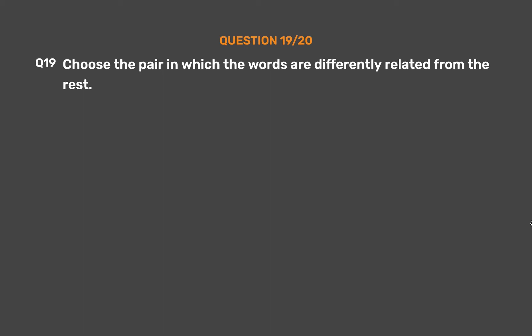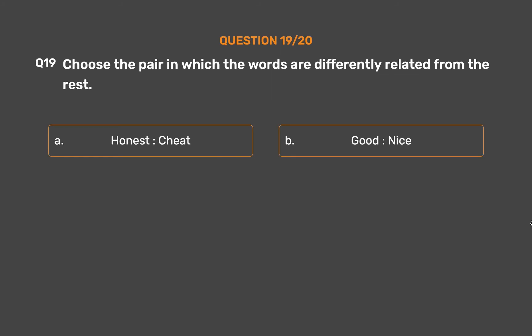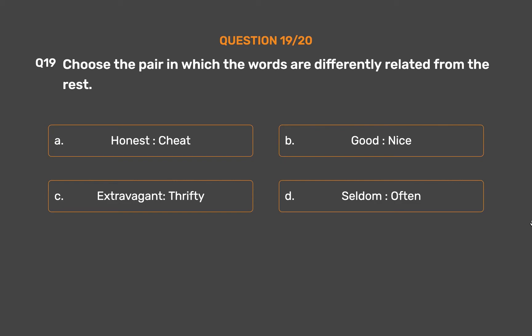Question number 19. Choose the pair in which the words are differently related from the rest. Option A: Honest, Cheat. Option B: Good, Nice. Option C: Extravagant, Thrifty. Option D: Seldom, Often.